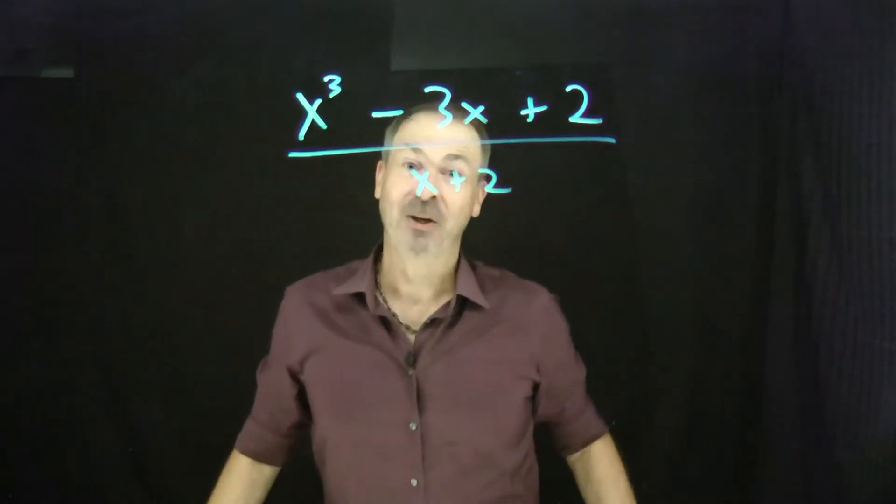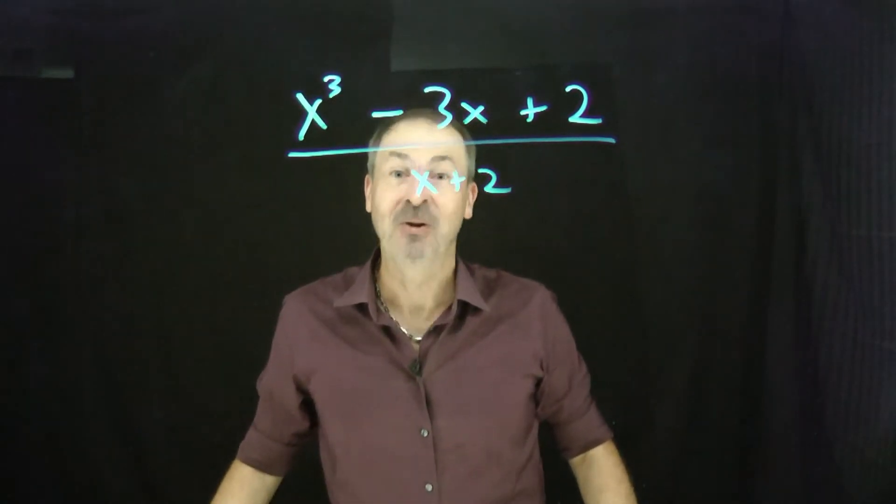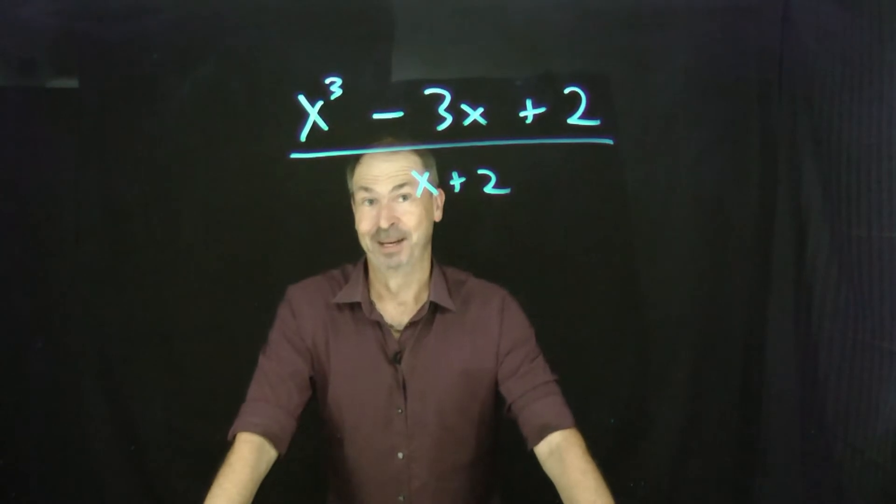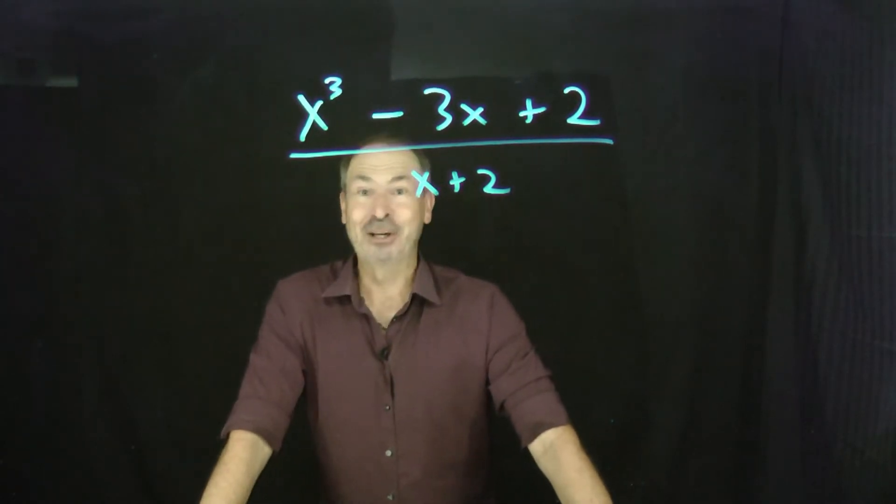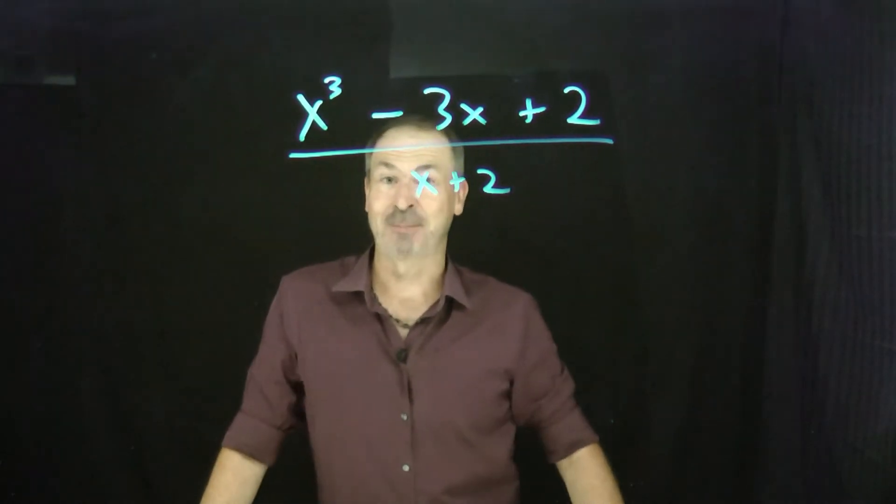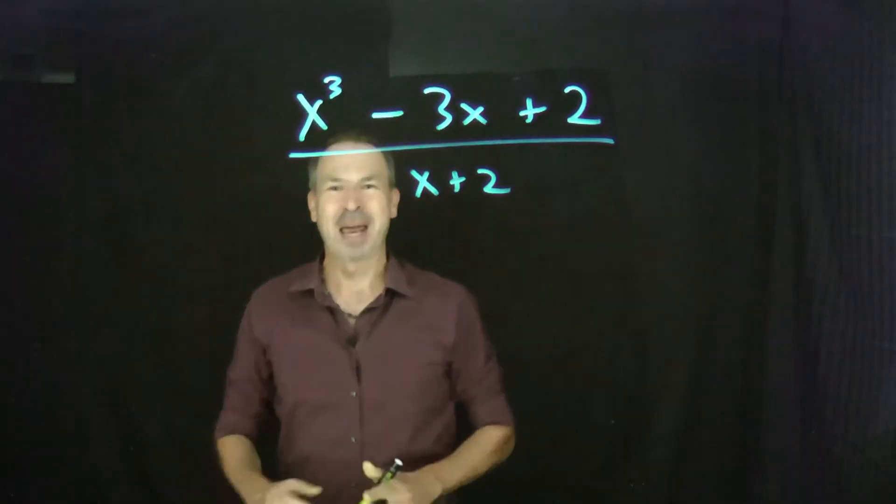Now we have a problem. Houston, we have a problem. Houston, we have a very serious problem. Can we do something like x cubed minus 3x plus 2 divided by x plus 2? That's negative coefficients. Can we handle that?